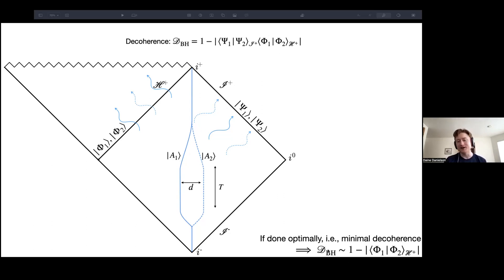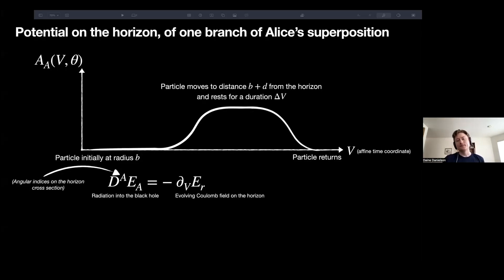And so the optimal amount of decoherence, the least amount of decoherence Alice can have, will be limited, cannot be made zero. It will be bounded from below by this amount of decoherence, unavoidable decoherence that will be due to the entanglement with photons propagating across the event horizon into the black hole.